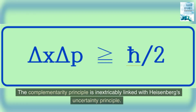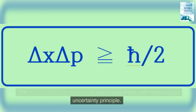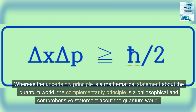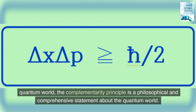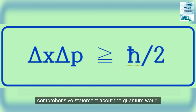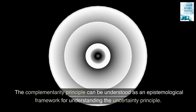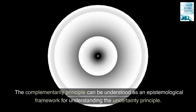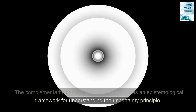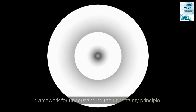The complementarity principle is inextricably linked with Heisenberg's uncertainty principle. Whereas the uncertainty principle is a mathematical statement about the quantum world, the complementarity principle is a philosophical and comprehensive statement about the quantum world. The complementarity principle can be understood as an epistemological framework for understanding the uncertainty principle.